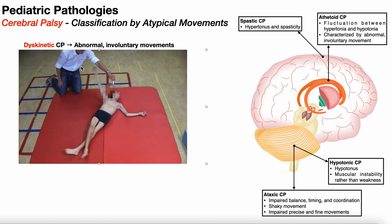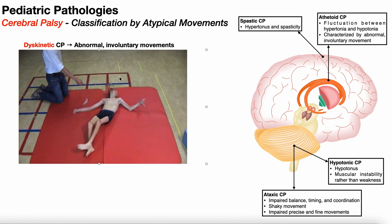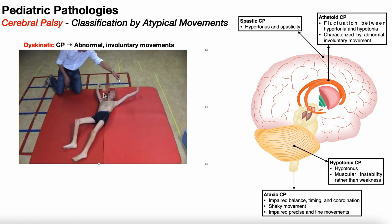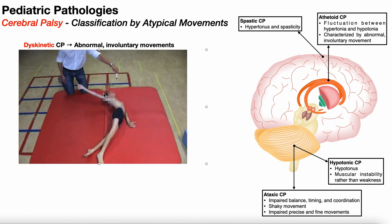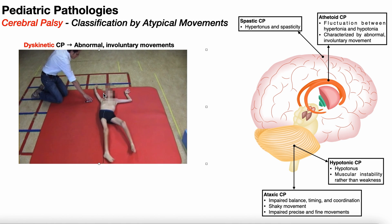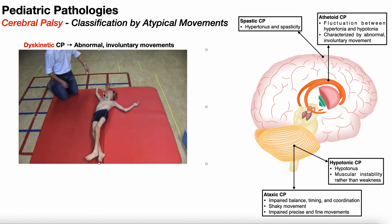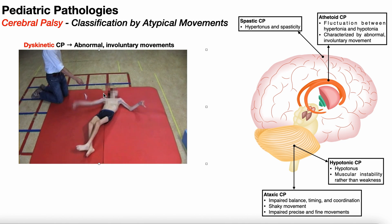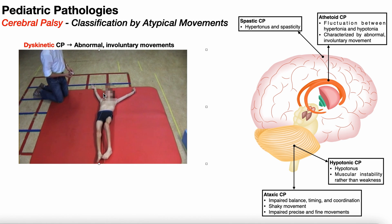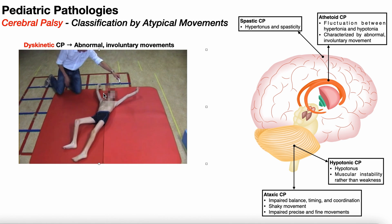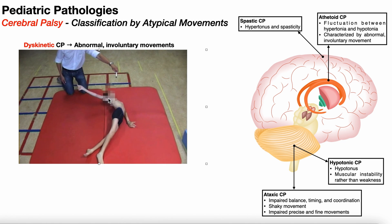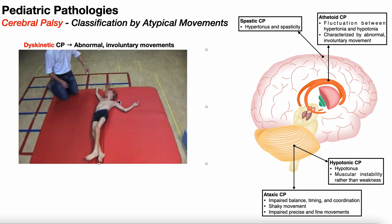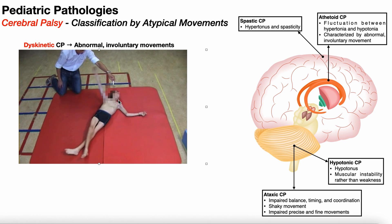Here, the practitioner is trying to get this child to grasp an object — it looks like a pen. Grasping it is very difficult because you need to open the hand using wrist and digital extensors, then close down on the pen with the flexors, while also coordinating the trunk, shoulder, and elbow to position the limb. Because of the rapid fluctuation between hypertonia and hypotonia, this characteristic abnormal involuntary movement makes tasks like grasping an object extremely difficult.